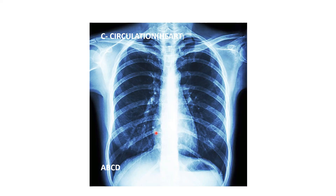Now the size of the heart can be measured in the thorax. You can identify if the heart is increased in size — known as cardiomegaly. How will you diagnose cardiomegaly? If the maximum horizontal diameter of the heart is more than half the width of the thoracic cavity, then the patient is said to have cardiomegaly. This is the clinical assessment for C, for Circulation.